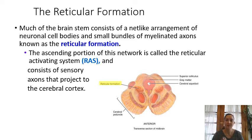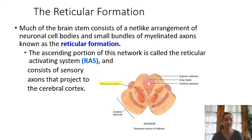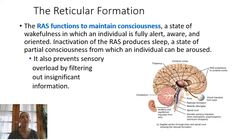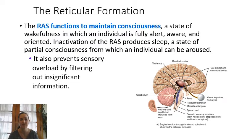The reticular formation is a collection of cell bodies that string along the entire brainstem. A particular pathway within it is called the reticular activating system, which is important for consciousness. When the reticular activating system is active, you're awake. When it's inactive, you go to sleep — not completely unconscious, just asleep, in a state you can still be woken from.